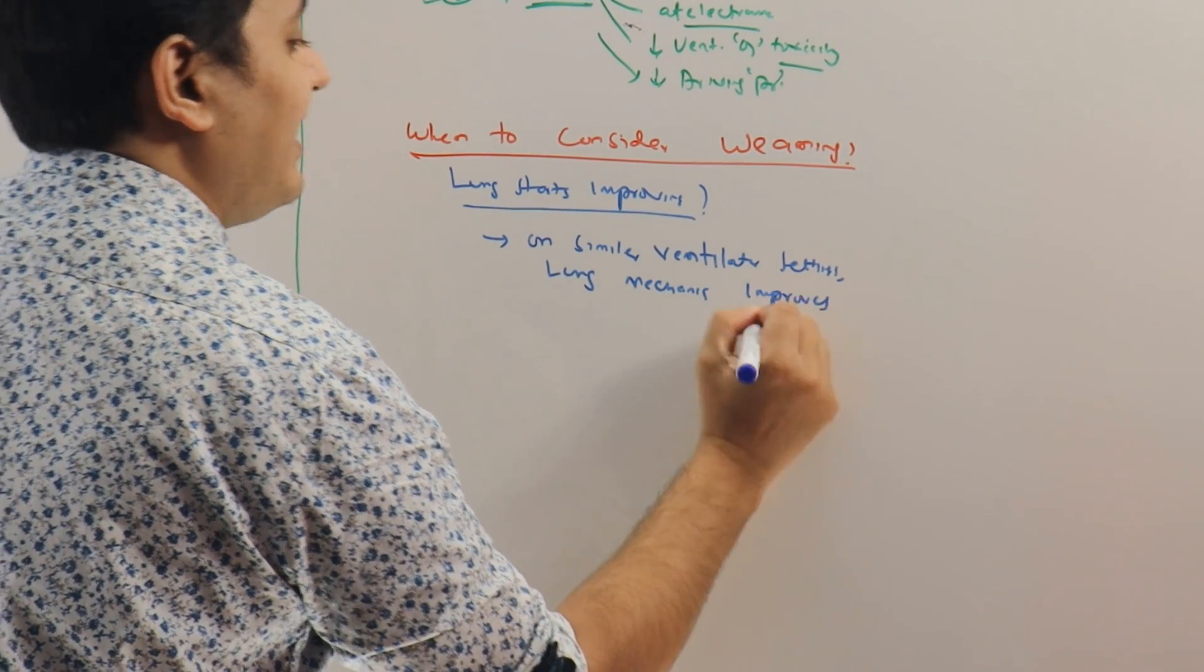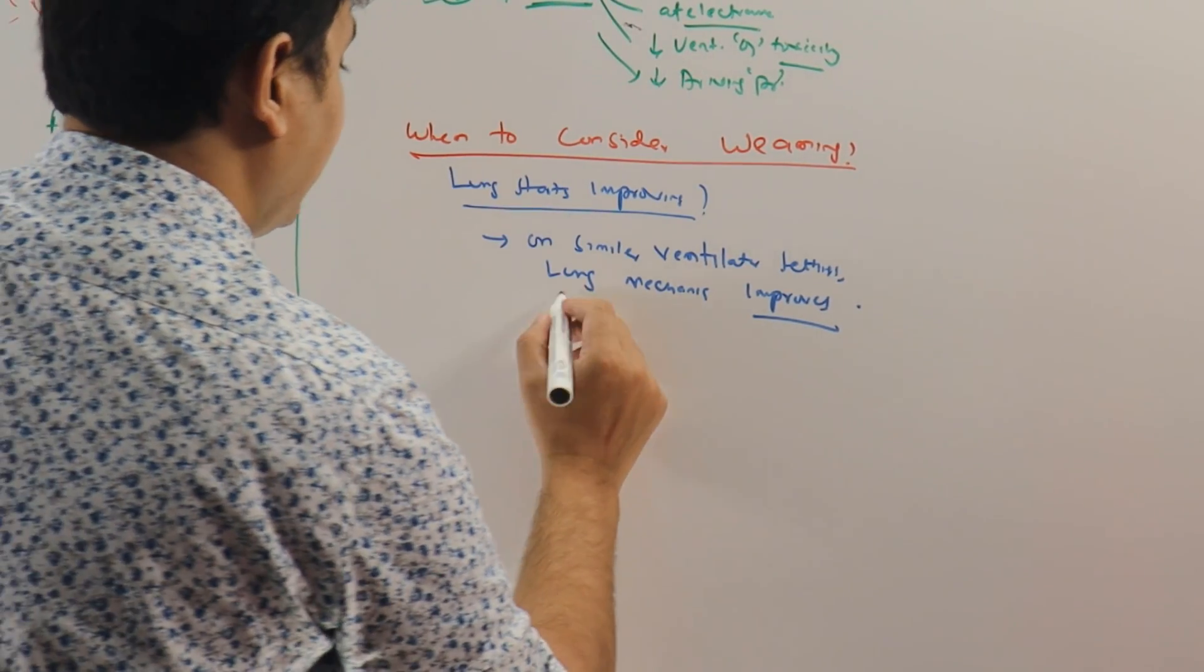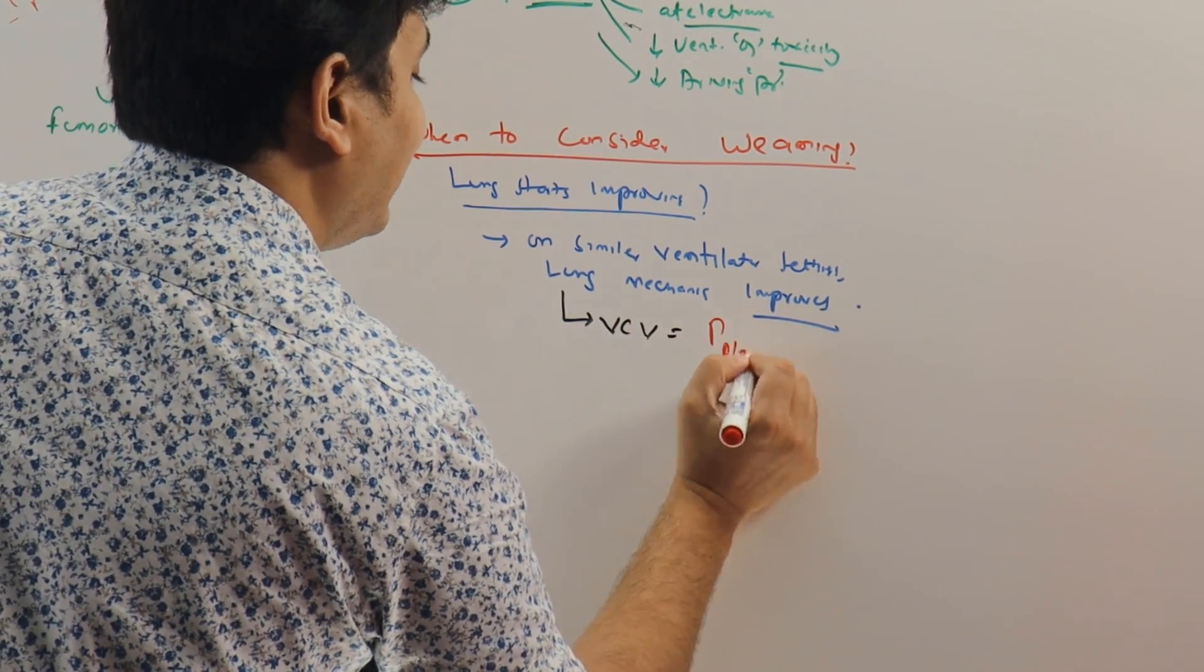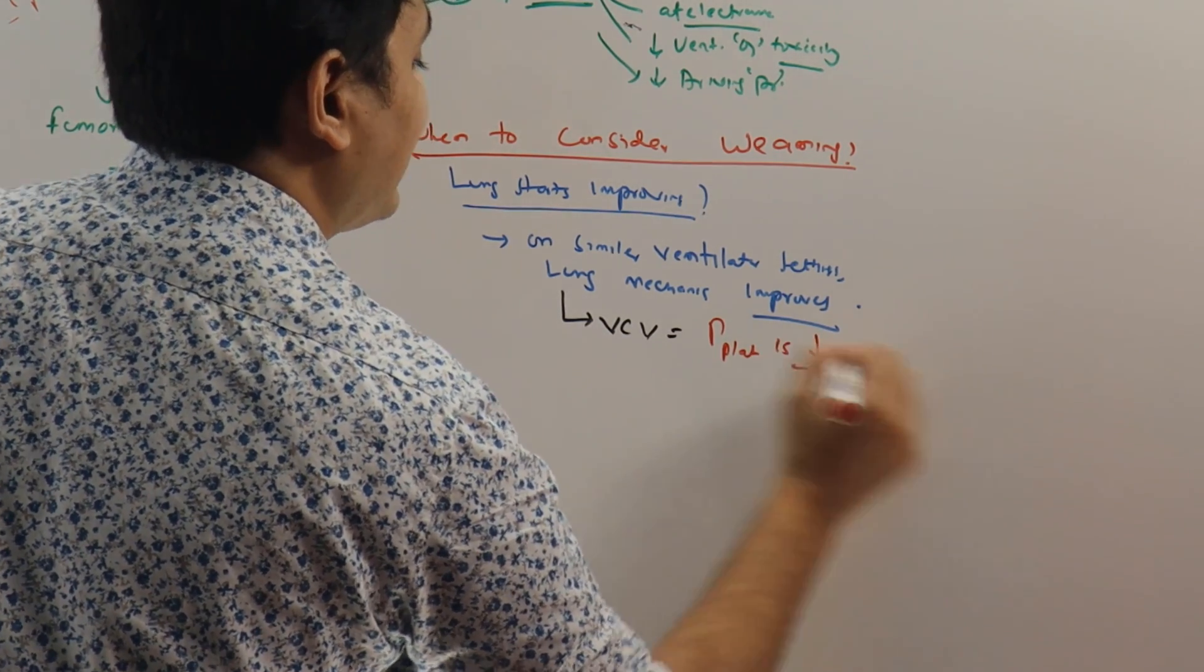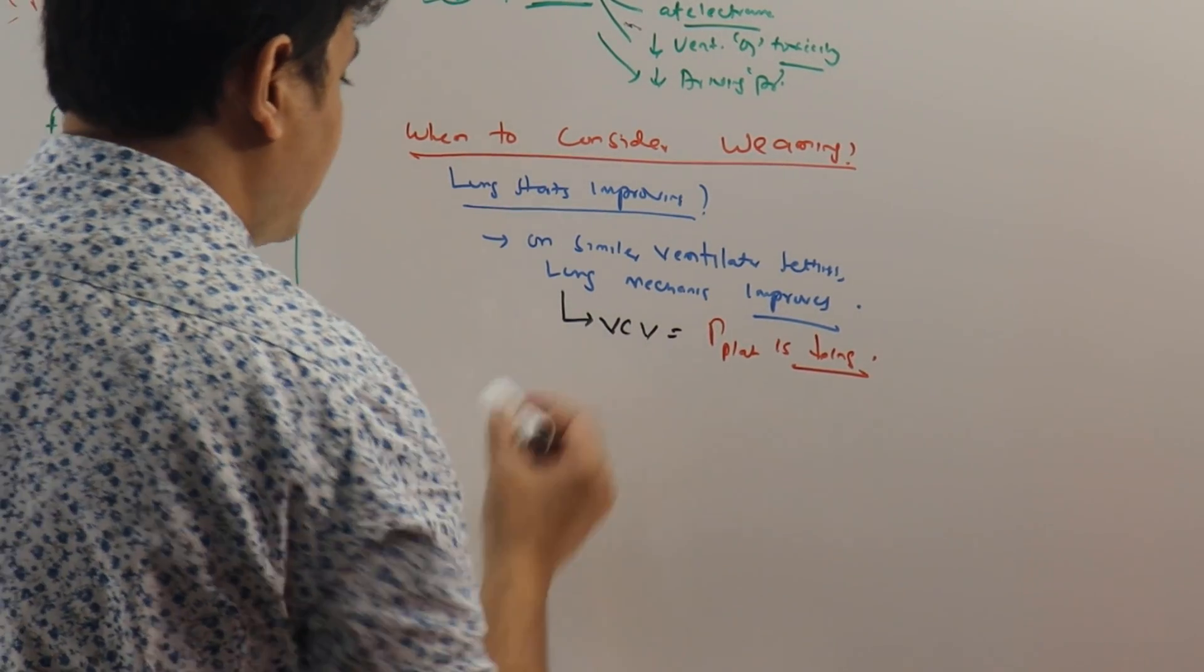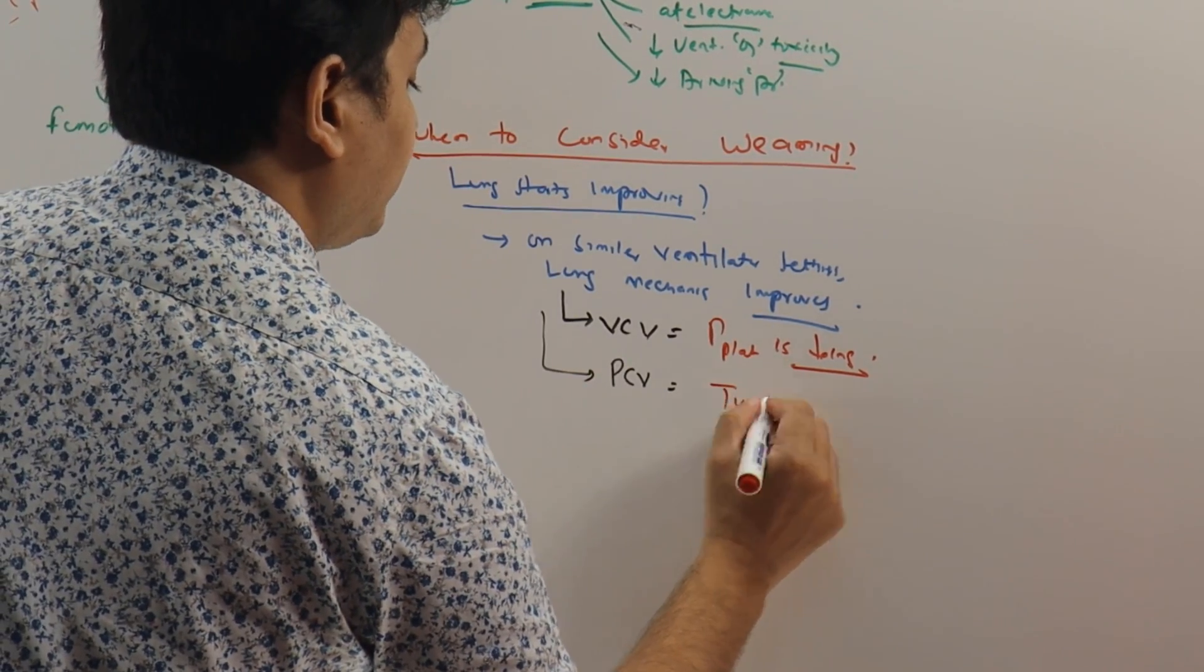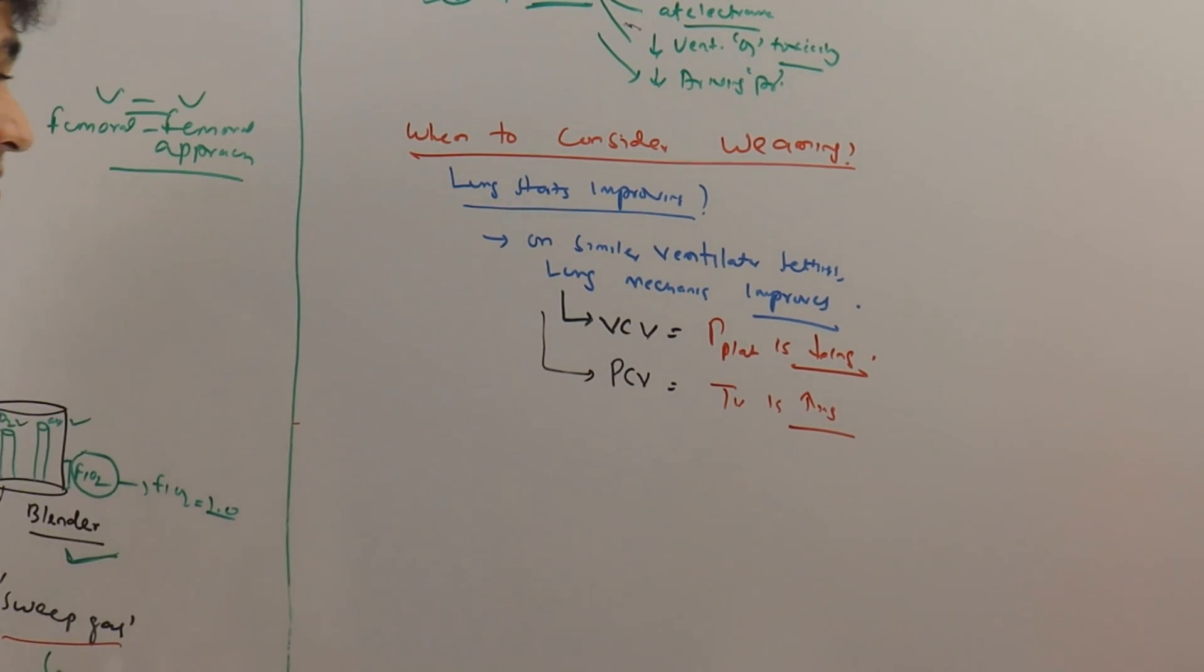We have put the patient on ventilator settings and the next day you come and see. If the patient is on VCV and you see the P plat is actually decreasing on same ventilator settings, that means the lung's compliance is actually improving. And if the patient is on PCV and you see the tidal volume is increasing on same pressure control, that also means the lung's compliance is increasing.